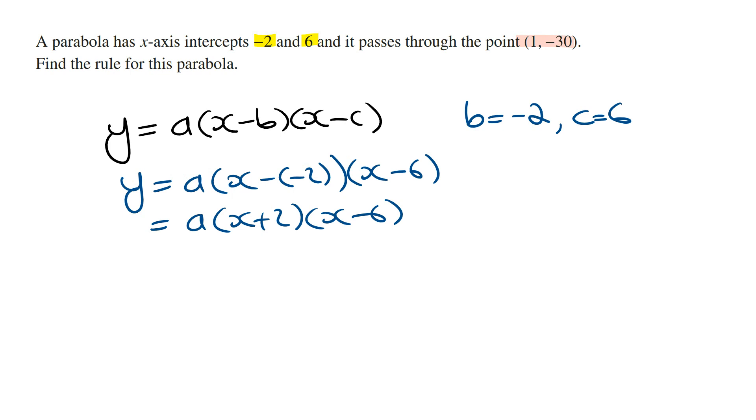And so if we sub this into the general rule, we let x = 1 and y = -30, we can solve for the value of a.